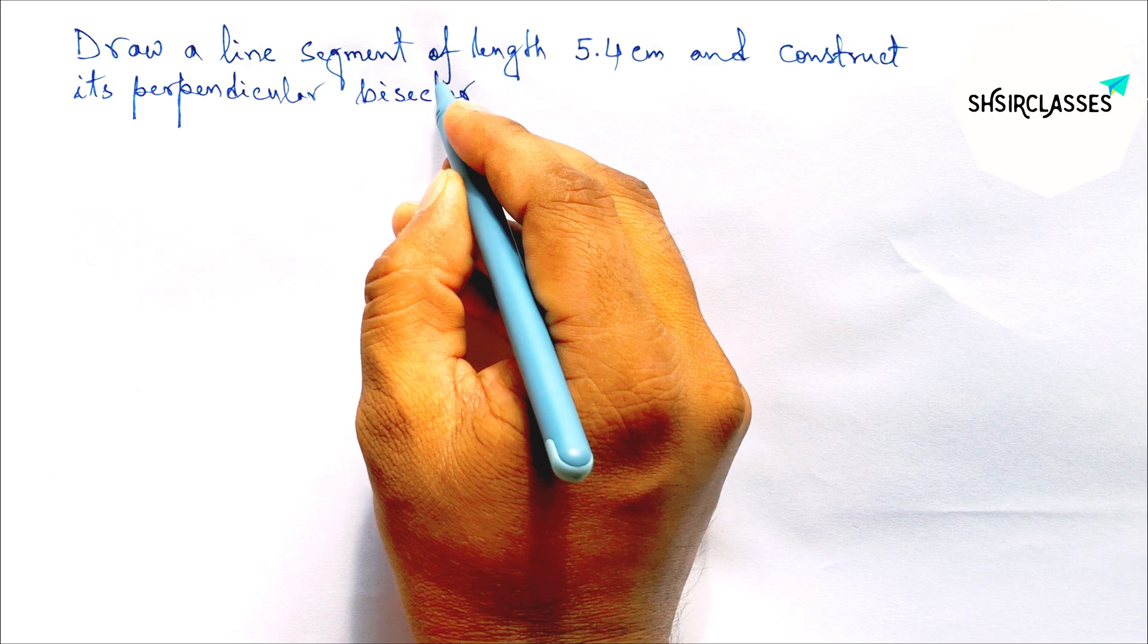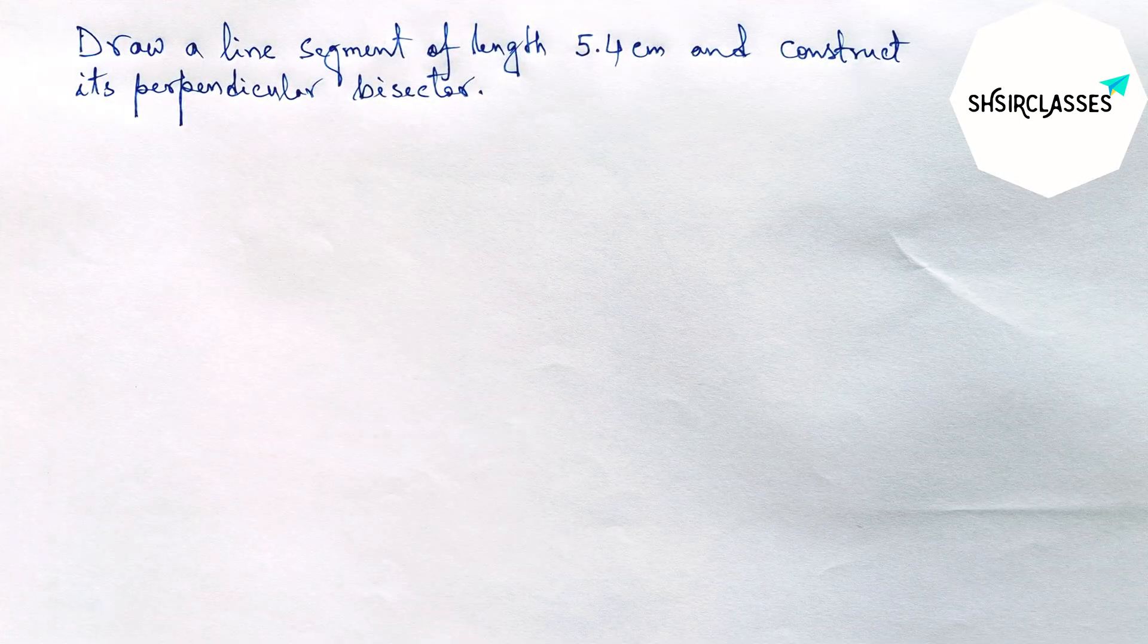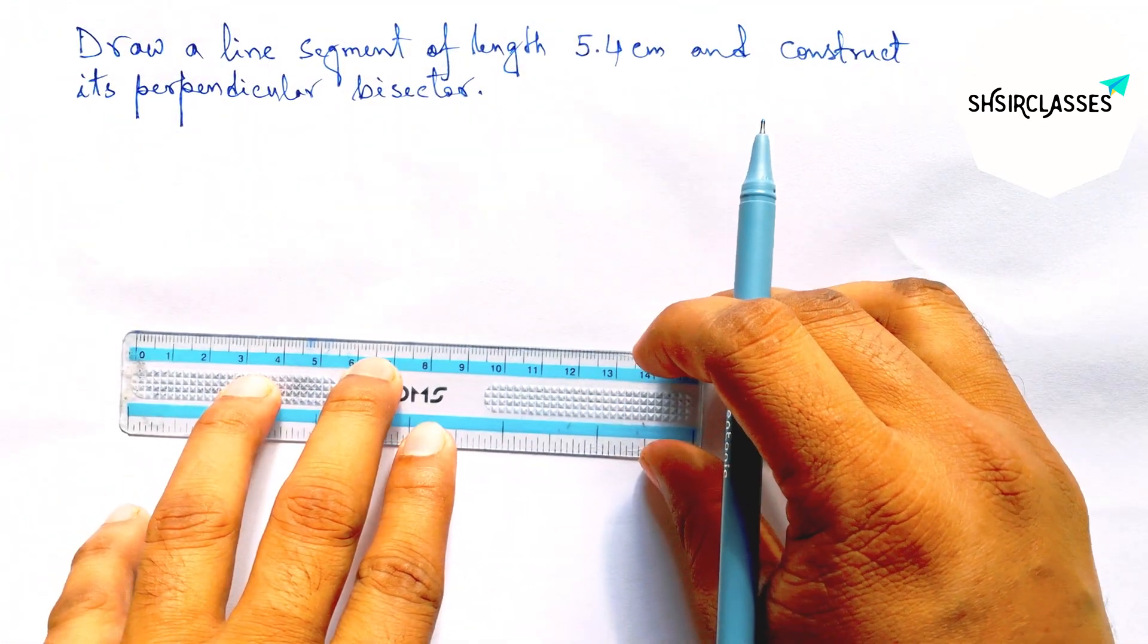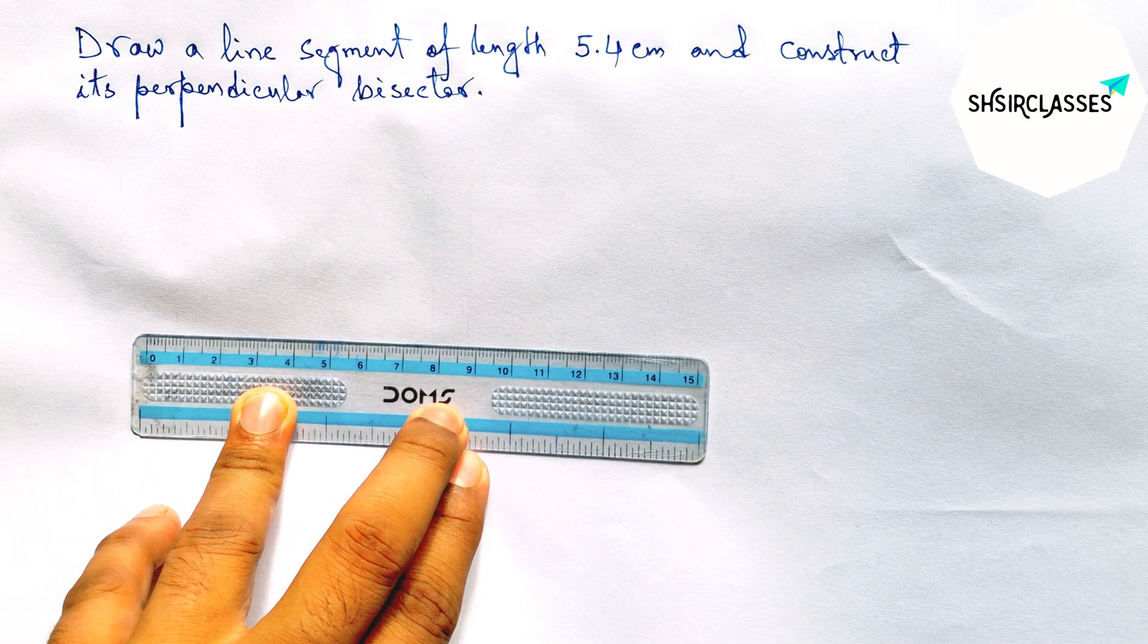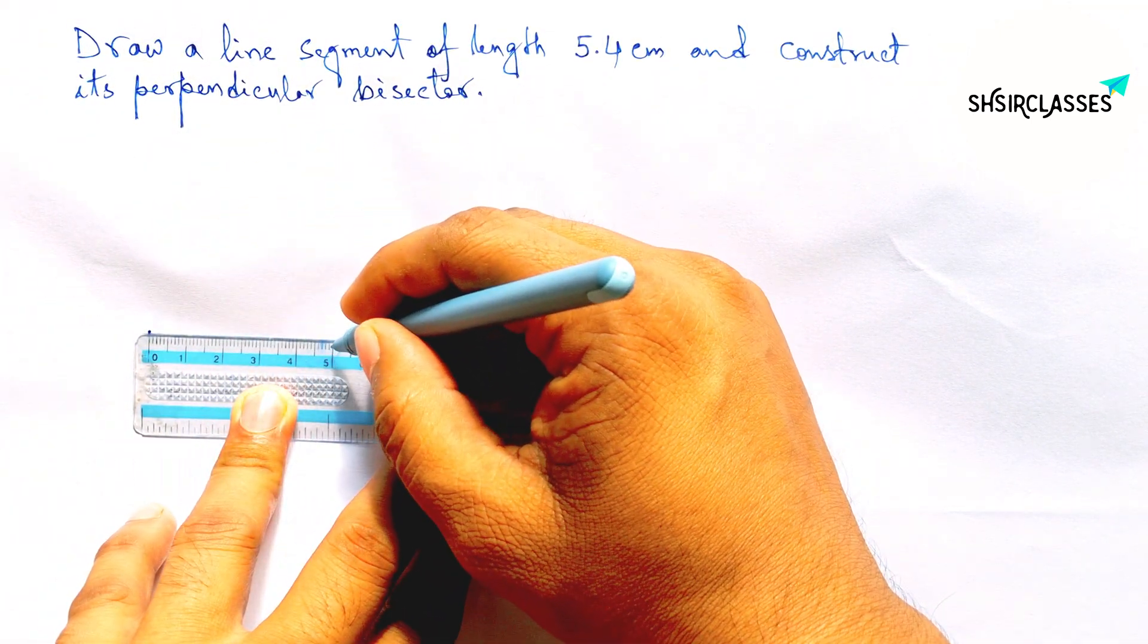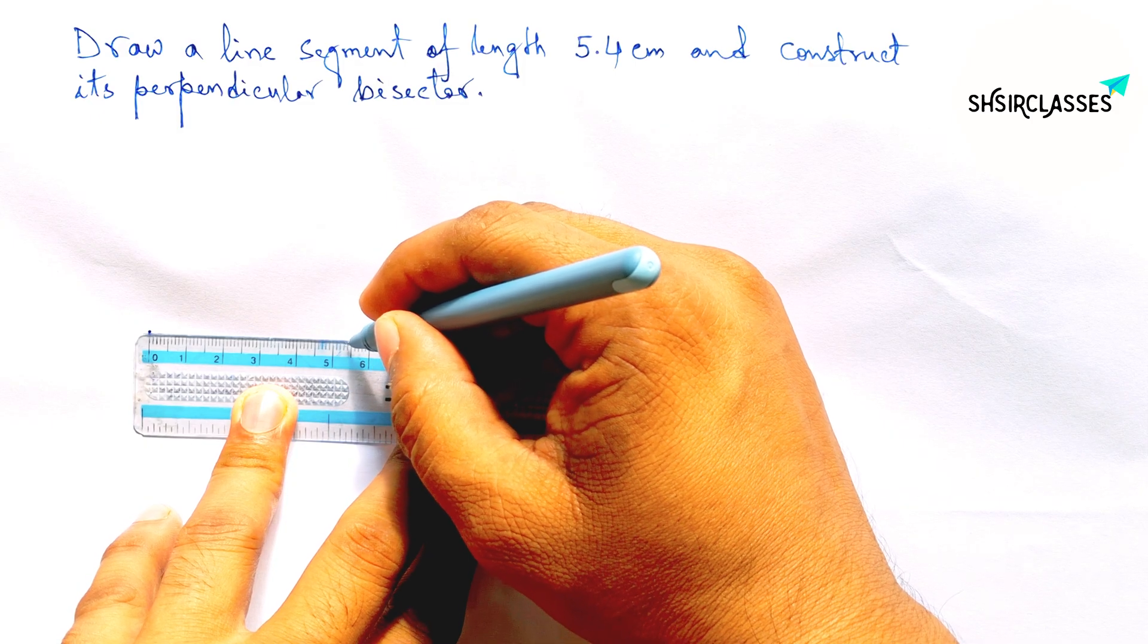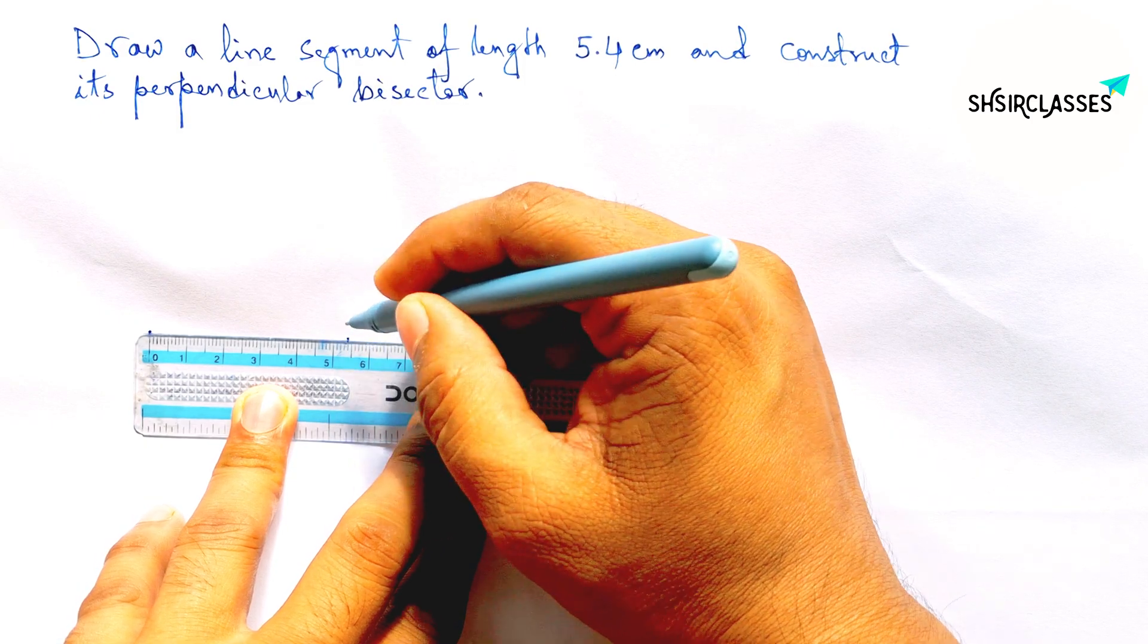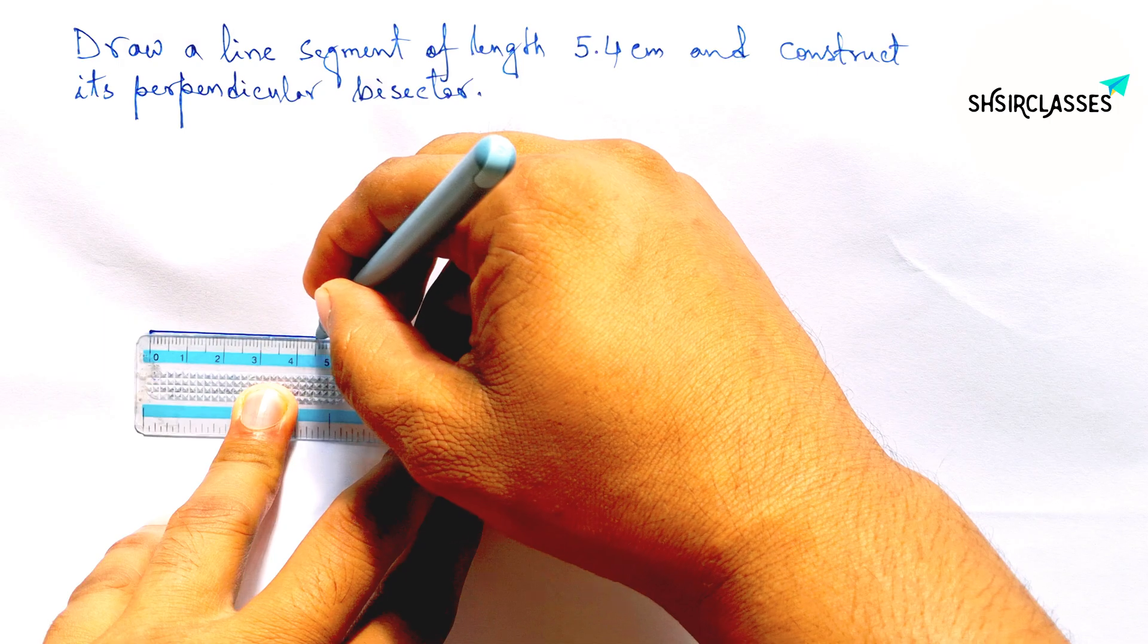Let's start the video. First of all, let us draw here a line segment of length 5.4 centimeter. So here 5 and counting 5.4, so this is 5.4 centimeter line segment.